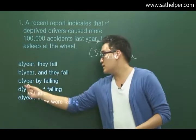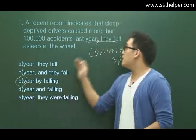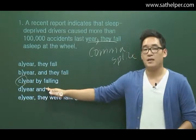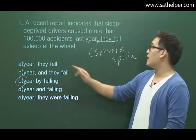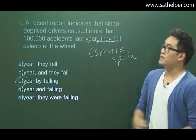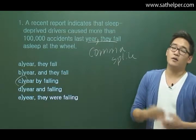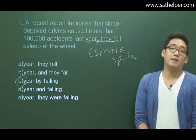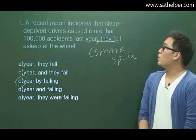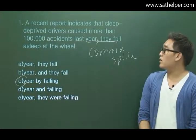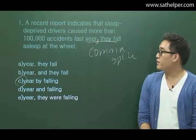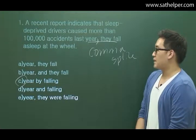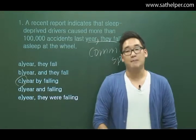The best way is by choosing C — putting the clause into a prepositional phrase with the preposition 'by' and making it into a gerund instead of its own active verb. This converts it into a dependent clause coupled with an independent clause, making it a very good complex sentence: 'A recent report indicates that sleep deprived drivers caused more than a hundred thousand accidents last year by falling asleep at the wheel.' That's why C is the best answer.